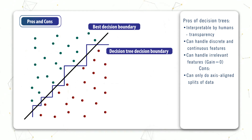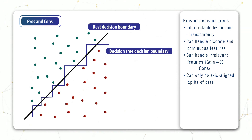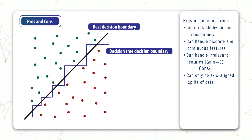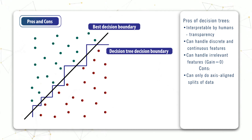That means it can only produce horizontal and vertical lines, so the decision boundary it might come up with would look something like this — a jagged boundary requiring around ten splits, five in either direction. Whereas a different technique like logistic regression could instead have produced a single diagonal line for the decision boundary.